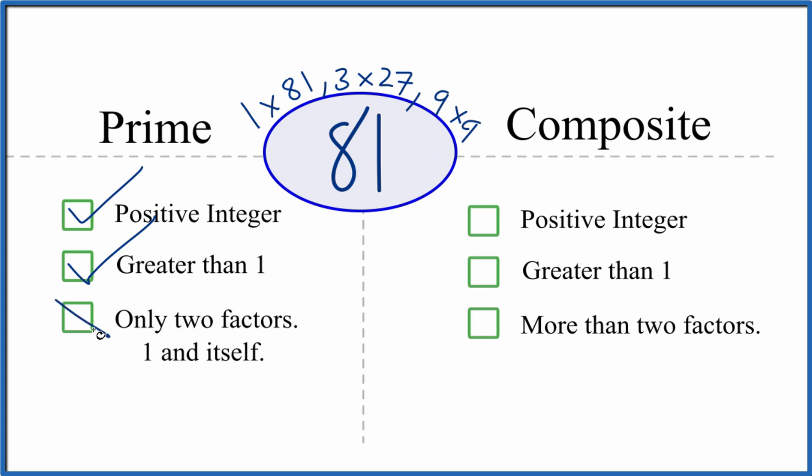So if there are more than two factors, 81 is not a prime number. But is it a composite number? Positive integer? Greater than 1. Are there more than two factors? Yep, there's a lot more than two factors. So 81, that's a composite number.